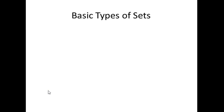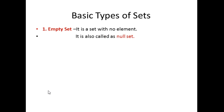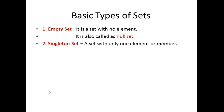Now we will study the basic types of sets. There are many types; we will only go over the basic ones. The first type is an empty set — a set with no element or nothing inside, which is why it's called empty. It is also called a null set. We also have a singleton set.